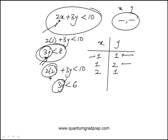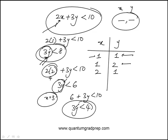So it's equal. When I go to the next higher value of x, which is 3, that becomes 6 plus 3y less than 10, 3y is less than 4. Here, again, y can only be 1.